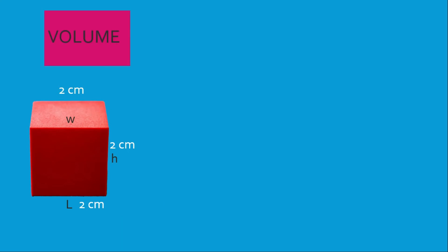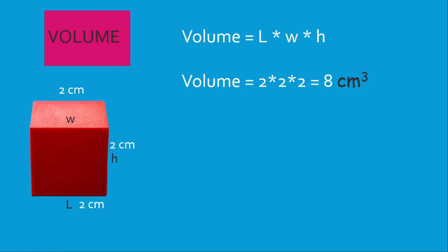Now we want to look at the volume. To calculate the volume, it's always going to be length times width times height. While we used length times width for area, now we're doing length times width times height. So the volume here is 2 times 2 times 2 — two for that side, two for this side, two for that side — giving us 8 centimeters cubed.